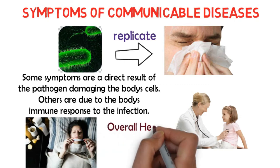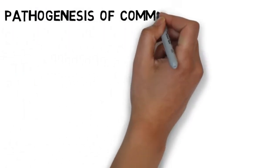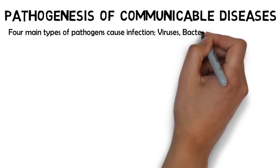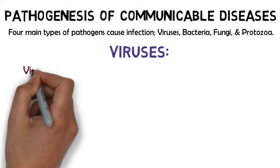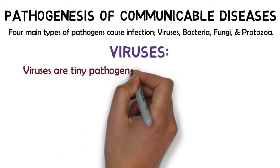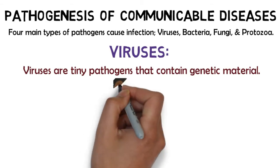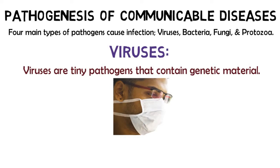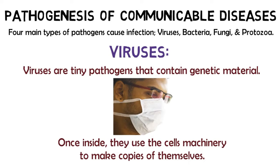Some communicable diseases may be mild and symptoms pass after a few days; however, some can be serious and potentially life-threatening, although symptom severity may vary depending on a person's overall health and immune function. There are four main types of pathogen that cause infection: viruses, bacteria, fungi, and protozoa. Viruses are tiny pathogens that contain genetic material. Unlike other pathogens, they lack the complex structure of a cell. To replicate, they must enter the cell of other living beings. Once inside, they use the cell's machinery to make copies of themselves.